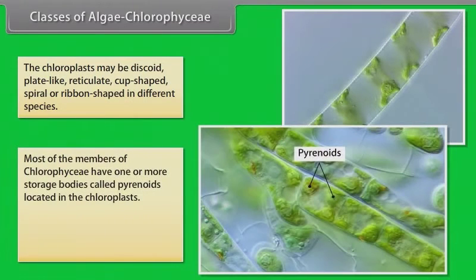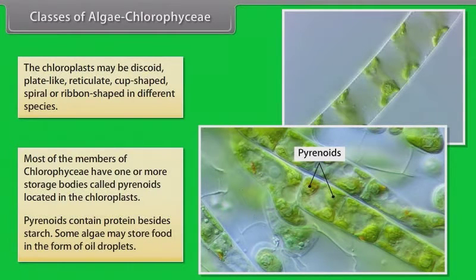Most of the members of Chlorophyceae have one or more storage bodies called pyrenoids located in the chloroplasts. Pyrenoids contain protein besides starch. Some algae may store food in the form of oil droplets.